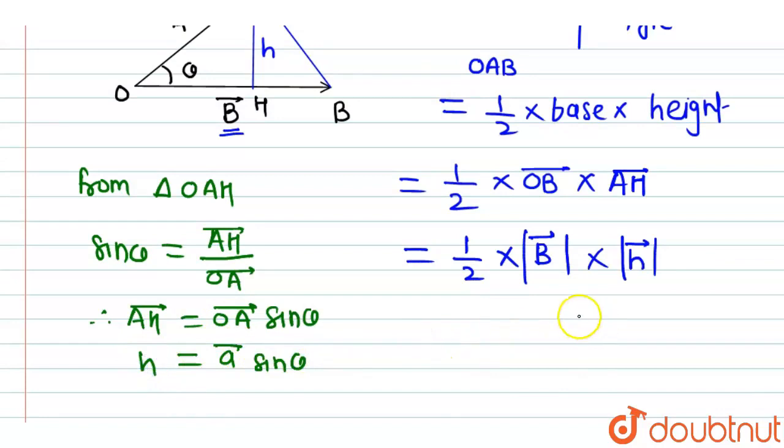So we can replace h by A bar sin theta. Putting this value here, it will be equal to one-half into mod of B bar into mod of A bar sin theta.